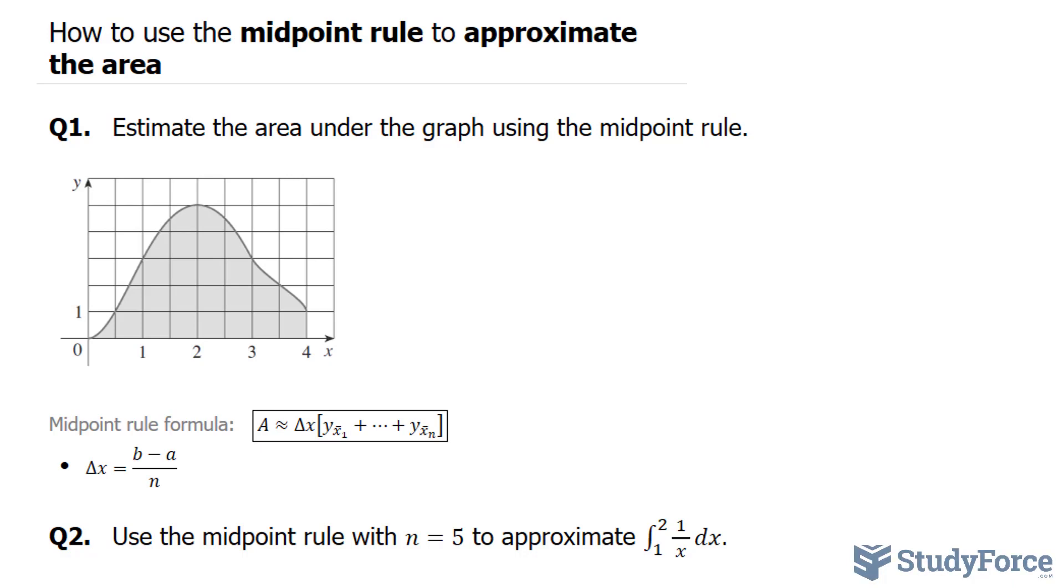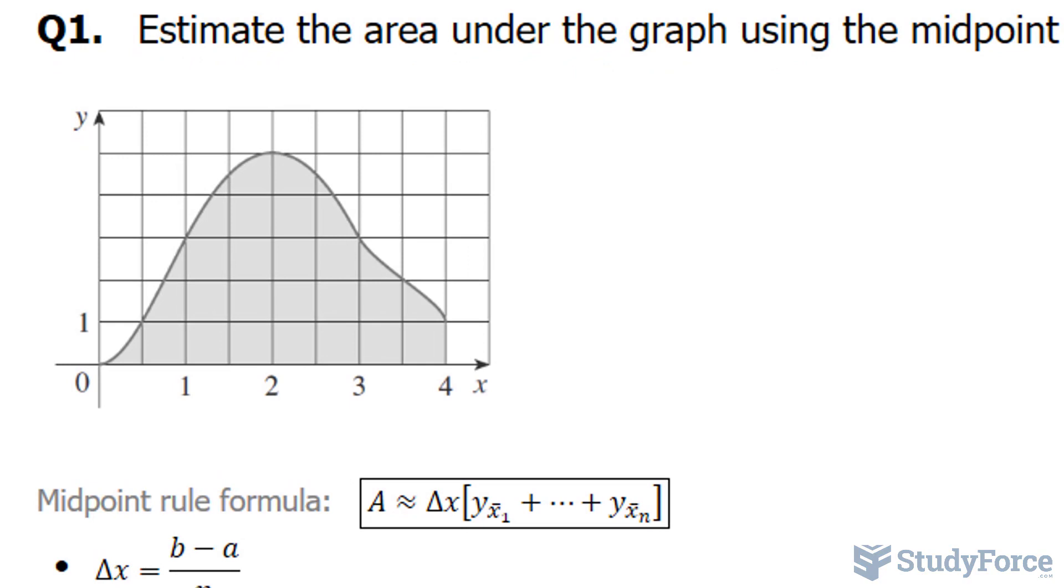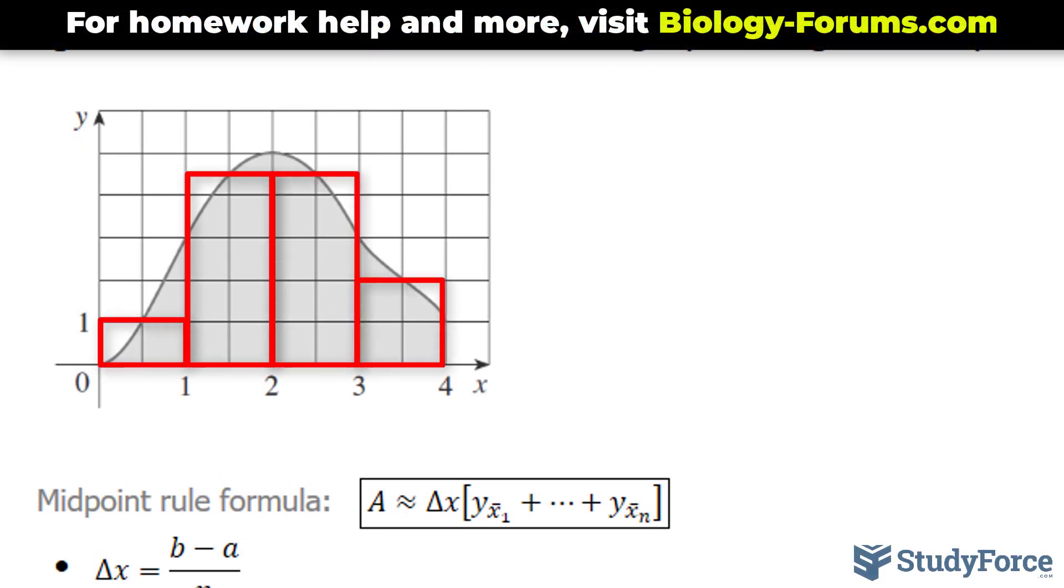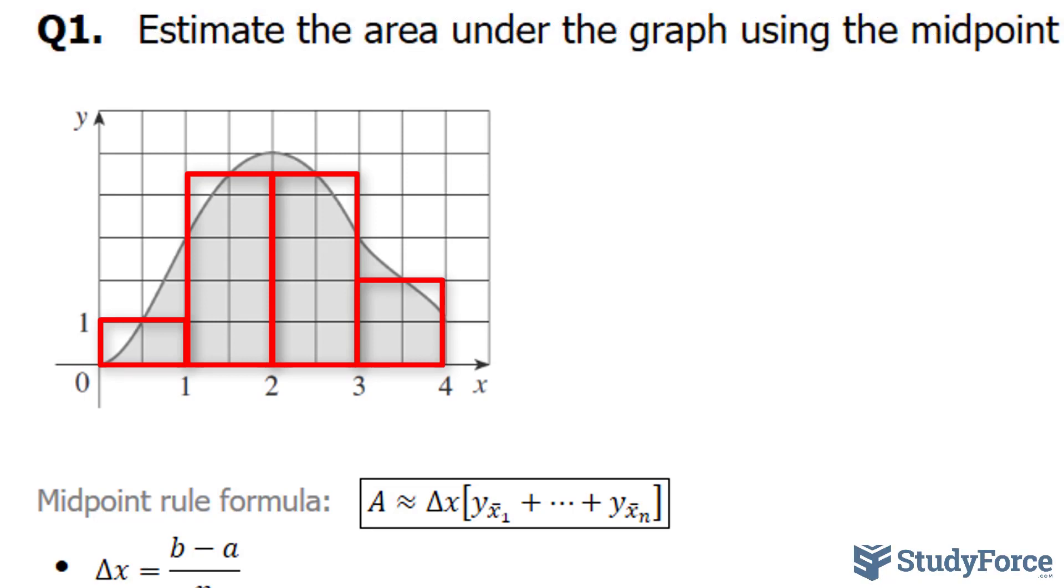Now before we begin answering this, the midpoint rule is an area approximation technique based on the idea that you can approximate the area of a shape by adding up the area of several smaller rectangles that make up the general pattern of the shape. Each of these mini rectangles are drawn based on the subintervals you choose, and it's called the midpoint rule because you use the middle point along the rectangle's width to locate the y-coordinate.